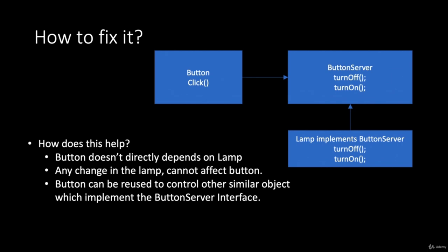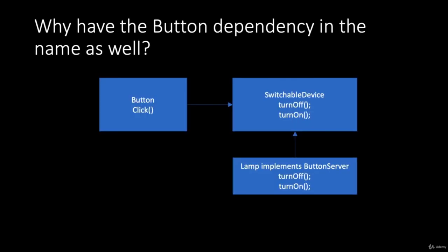We have fixed the DIP violation. Any change in Lamp does not affect Button as long as turnOff and turnOn methods work as expected. Now you can easily replace the implementing class of ButtonServer with a motor or fan or anything with similar functionality. Button is no longer tightly coupled to Lamp — it can be reused to turn on and off several different objects. However, the name 'ButtonServer' implies the abstraction is only usable with a button. Renaming it to 'SwitchableDevice' ensures the abstraction name is not coupled with the Button, meaning the abstraction does not depend on the detail. That's all for the Dependency Inversion Principle.